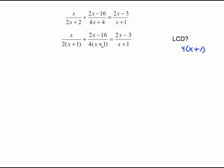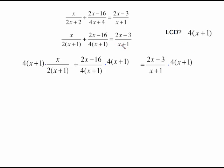That needs to be multiplied times each one of those terms shown here. And then we're ready to cancel. x plus 1 cancels with x plus 1. 2 goes into 4 twice. 2 times x is 2x. Here all of it cancels the 4 and the x plus 1 and I just have 2x minus 16. On the right side the x plus 1 cancel. Distribute the 4 through here is 8x minus 12.